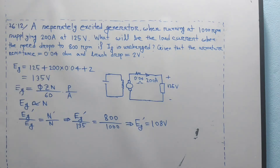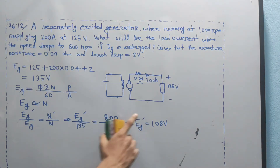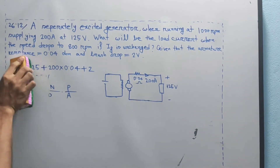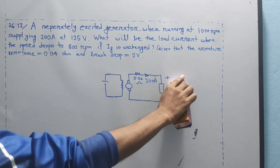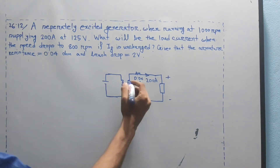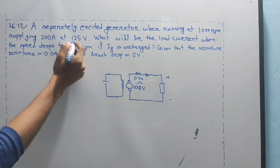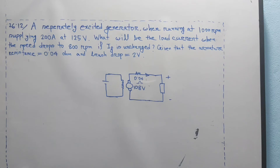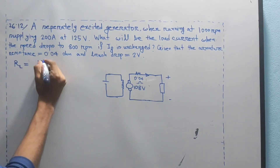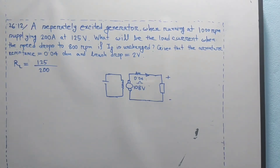We are going to change the speed but the load resistance remains the same. Using the fixed resistance, the new induced EMF at 800 RPM is Eg2 = 135 × (800/1000) = 108V. The load resistance RL equals terminal voltage divided by load current: 125 divided by 200 equals 0.625 ohm.